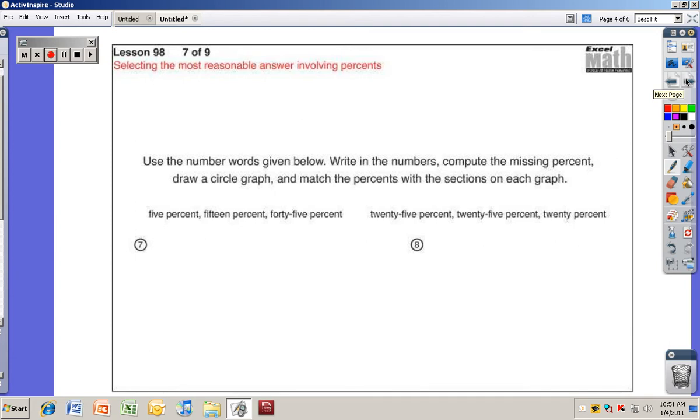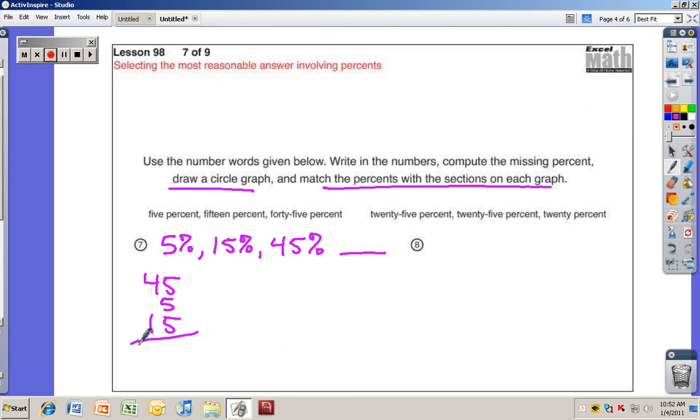Now what they're going to do is not give you the percents written out as numbers, but they're gonna do it as words. So then you have to compute the missing percent, draw the graph, and match the percents with each section of the graph. We're gonna do the whole thing here. We'll do the first one together and then I'll have you do the second one on your own. Okay, 5%. First of all, let's write these percents out. So that's gonna look like that, right? 15%, and 45%. And then we're gonna have one piece that's missing. So what are we gonna do first, everybody? Add them together.